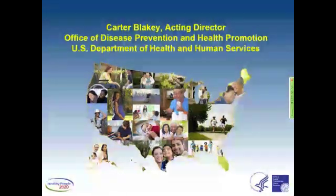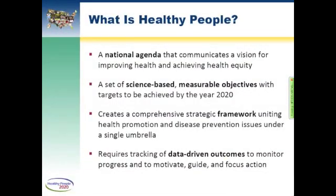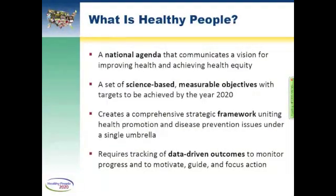I'd like to give you all a brief introduction to Healthy People. Healthy People has been around for about 40 years. In December of 2010, the U.S. Department of Health and Human Services launched the fourth iteration of the initiative called Healthy People 2020. For these decades, Healthy People has provided a national agenda that communicates a vision for improving health and achieving health equity. It also provides a set of science-based measurable objectives with targets to be achieved over a ten-year period, with targets in this decade set for the year 2020.